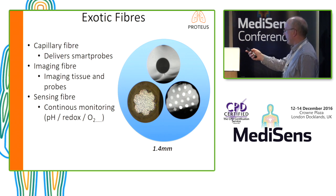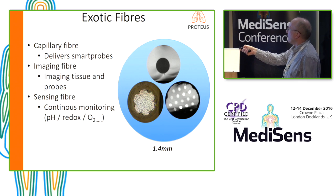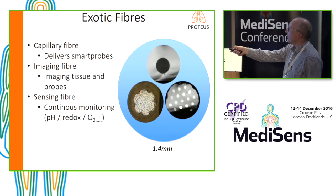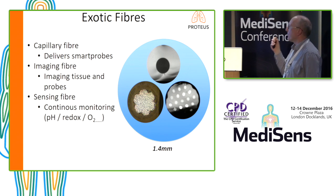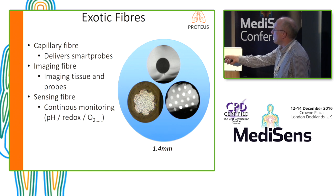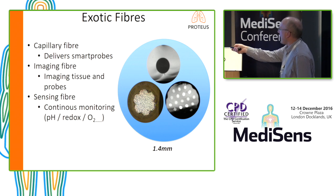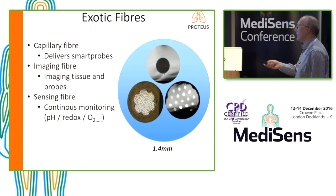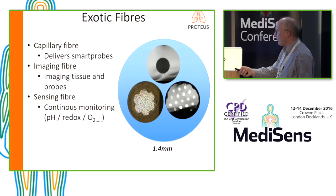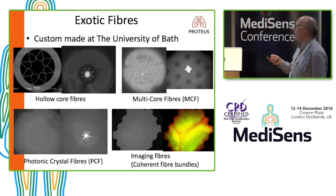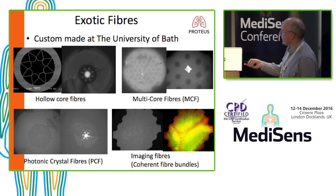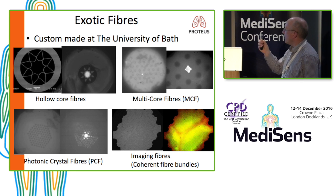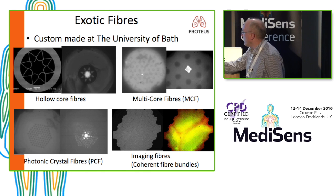Here's an optic fibre, and here are some of the parts shown for real: a hollow fibre delivering smart molecules — smart probes, we call them — a fibre bundle for imaging developed in the project, and an area with small pits in which we place beads that pick up sensing of things like pH, redox, or oxygenation. There are some nice images from the Bath team of the types of fibres they have manufactured: hollow fibres for fluid delivery, fibres with pits for bead location, and imaging fibres.